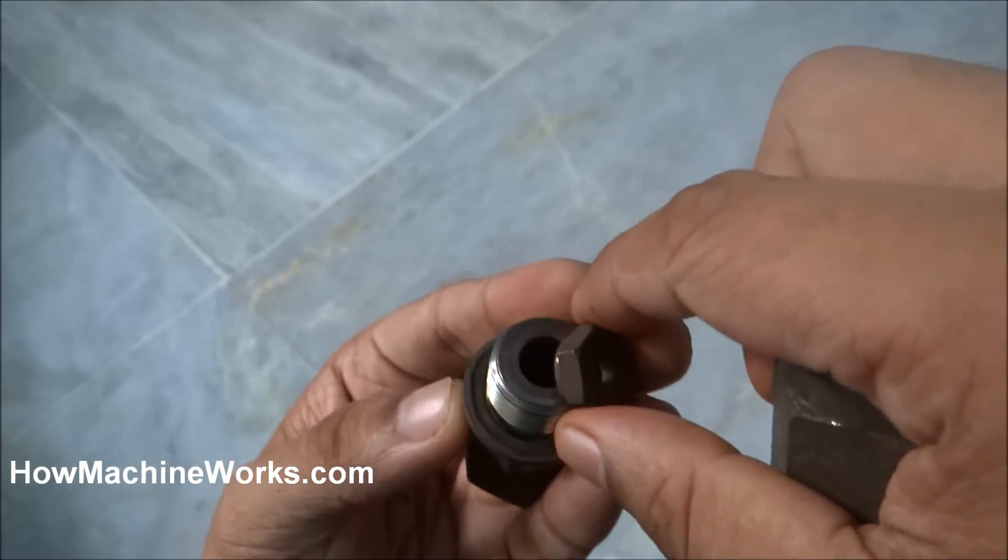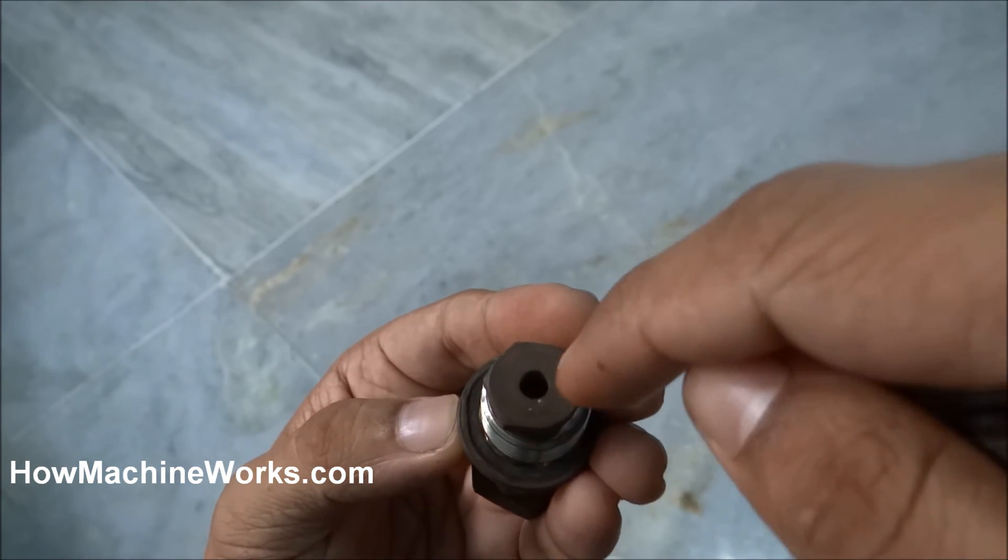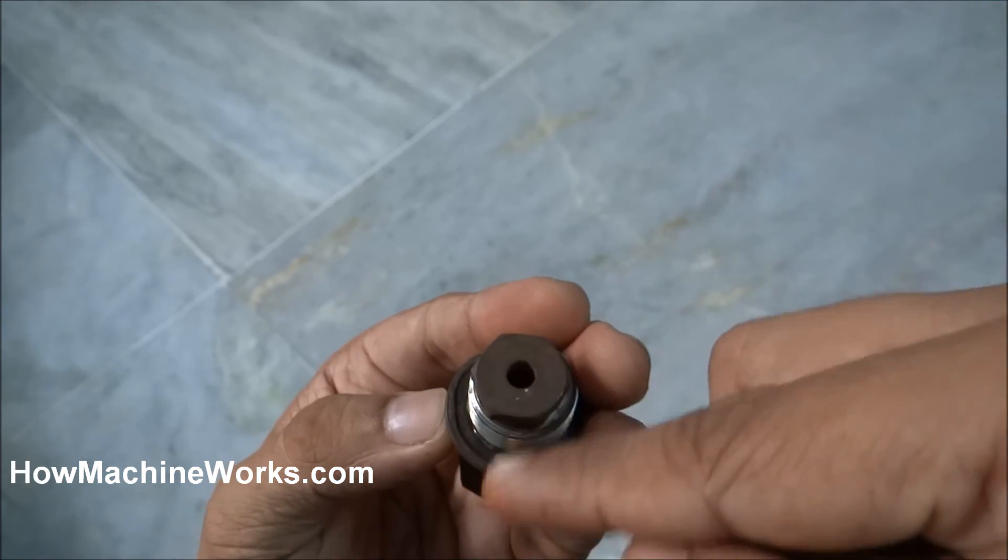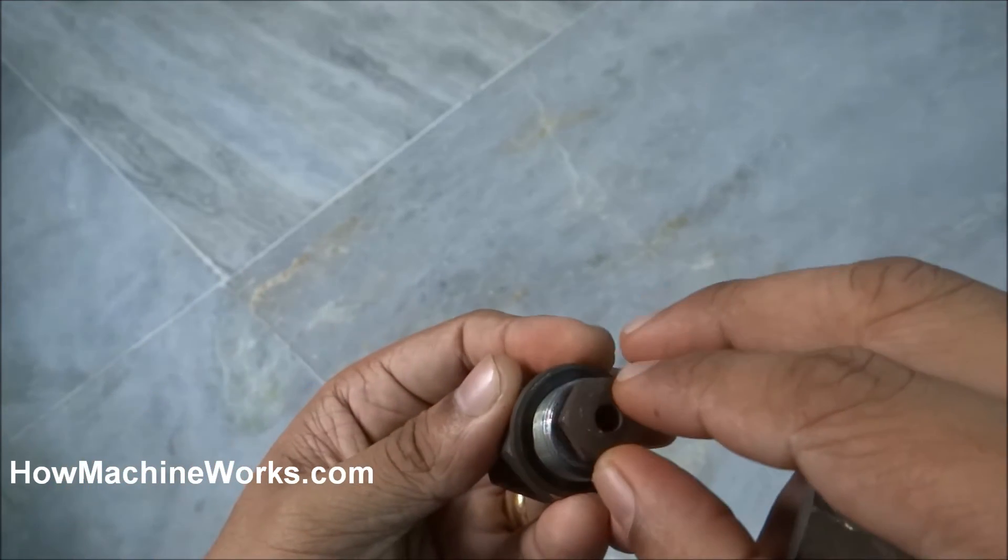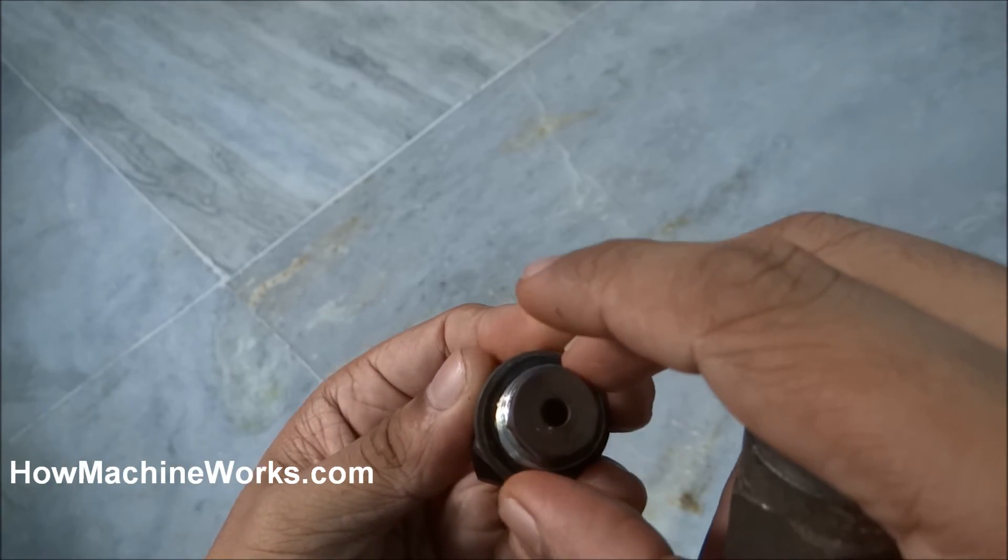It will rest on the top like this. So we have three directions of flow: one here, one here, and one here. We'll have more flow in the forward side, and when the reverse flow comes, the valve goes back and rests here.